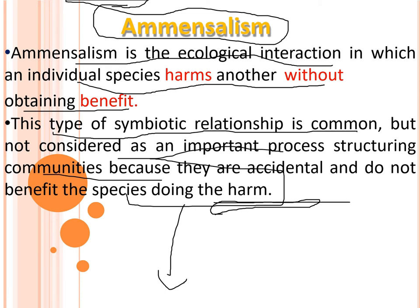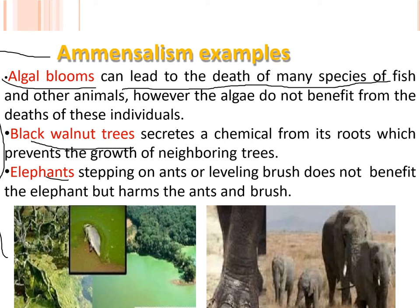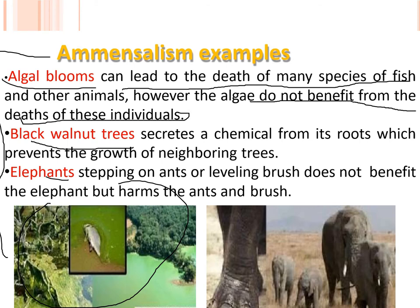Some examples of amensalism are algae blooms, black walnut trees, and elephants. Algae blooms can lead to the death of many species of fish. The algae do not benefit from the death of these individuals.